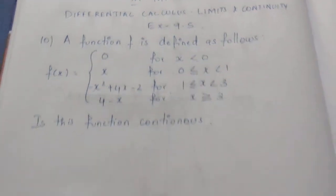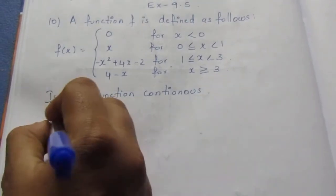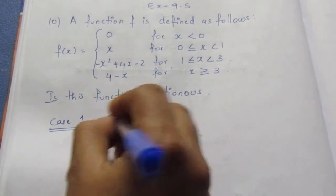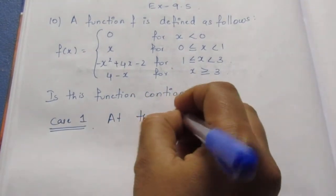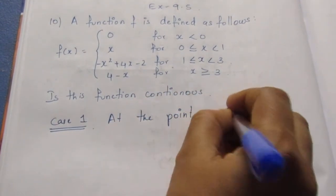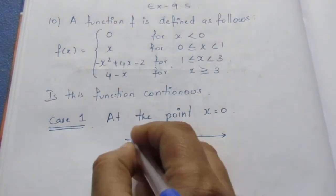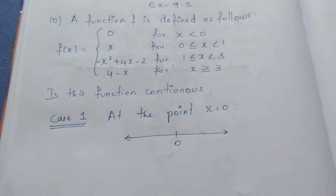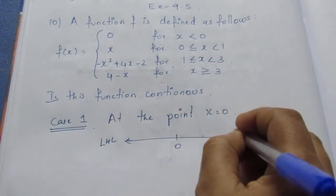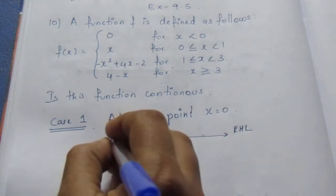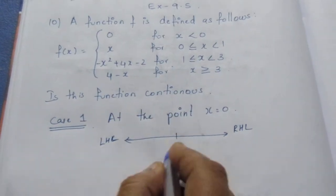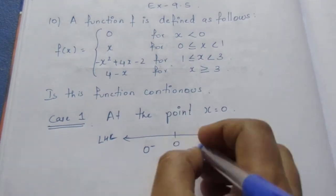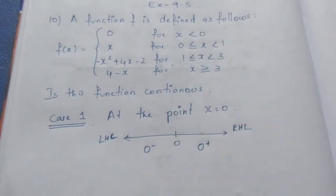We begin with case 1, at the point x equals 0. We use a number line to identify the left-hand limit and right-hand limit at x equals 0.